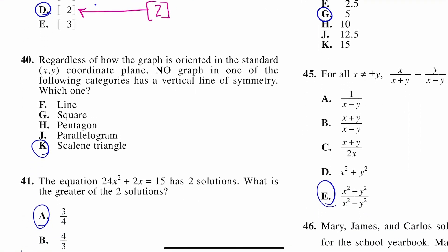Number 40, regardless of how the graph is oriented in the standard XY coordinate plane, no graph in one of the following categories has a vertical line of symmetry. Which one? So remember, a line of symmetry is basically just a line where if you folded that object in half, it would look the same on both sides, kind of like a butterfly. And it says it doesn't matter how the graph is oriented in the standard coordinate plane, so we're looking for any line of symmetry.